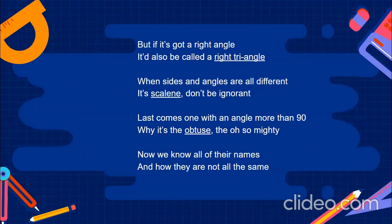But if it's got a right angle, it'd also be called a right triangle. When sides and angles are all different, it's scalene — don't be ignorant. Last comes one with an angle more than 90 — why, it's the obtuse, the oh so mighty.